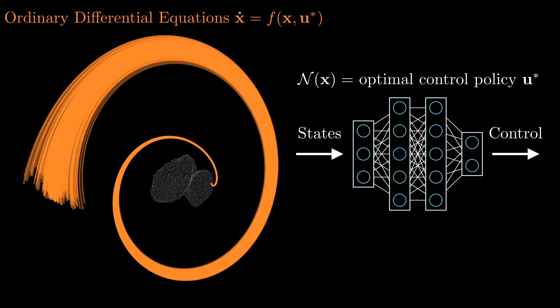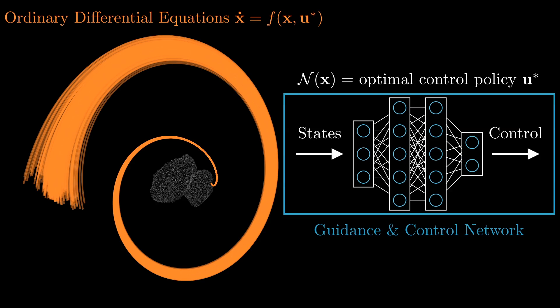It turns out that the mapping between the states and optimal control can be learned. Using behavioral cloning with the states as features and the controls as labels, a simple feedforward neural network can be trained to learn the optimal control policy. The resulting network is called a guidance and control network.